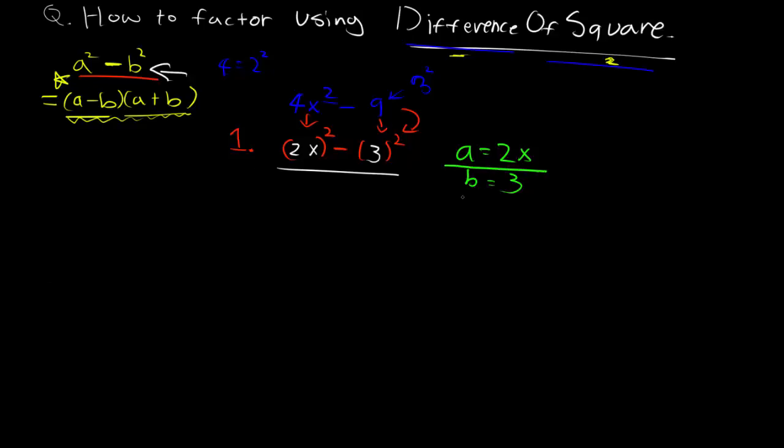The second step is to just use the form. So we have (2x minus 3), because that is (a minus b), right?